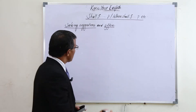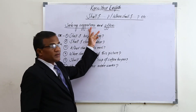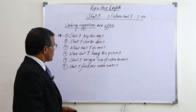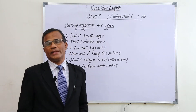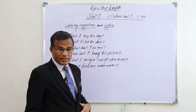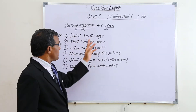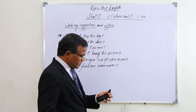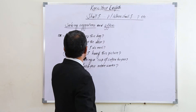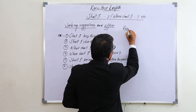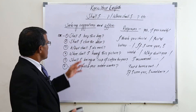I'll give some examples and explain them. For seeking suggestions and offers we use 'shall I.' When we want a suggestion from others, we use it — for example: 'Shall I buy this bag?' meaning 'What's your opinion? Does it seem good?' When we want a suggestion, we ask this question. I'll mention the responses on the board.